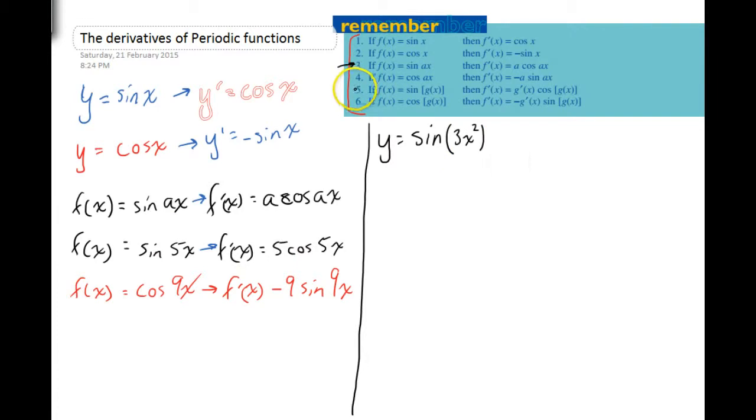Now, these last two rules, rule five and rule six, it's probably where it starts getting interesting. It says that if f of x equals sine of a function, then f dash x equals the derivative of that function, cos that function. It'll probably be easier if we look at it.